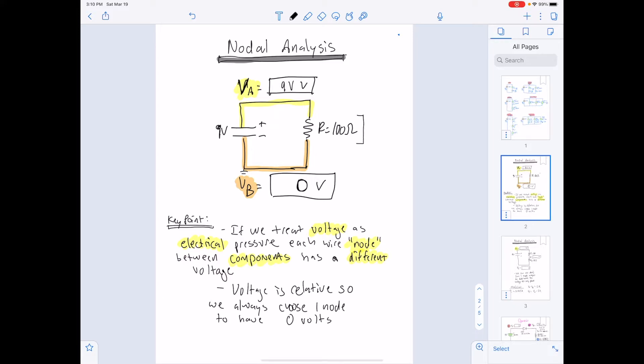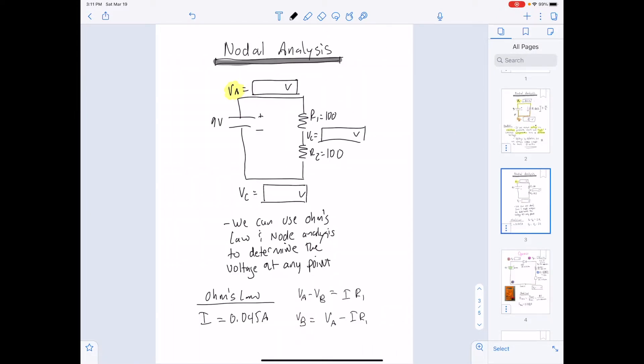If we are looking at voltage as supplying electrical pressure, and we want to find how much current is flowing through this resistor, we would use Ohm's law: current equals change in voltage, this node minus this node, divided by the resistance of the component. So we can find the current going through any component, anywhere, provided we understand voltage as electrical pressure, and every node would have a different pressure. Because voltage is relative, we always choose one node to have zero volts. And that, by convention, is the negative terminal of our battery, or negative terminal of our voltage source.